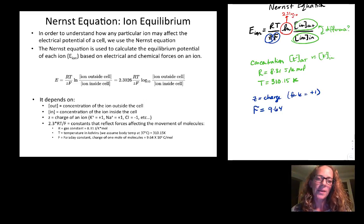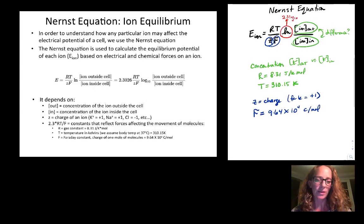Pause for a minute and put all of the constants together and calculate what RT over ZF would be for a positive 1 charged ion. Take a pause for a minute and see if you can work that out.